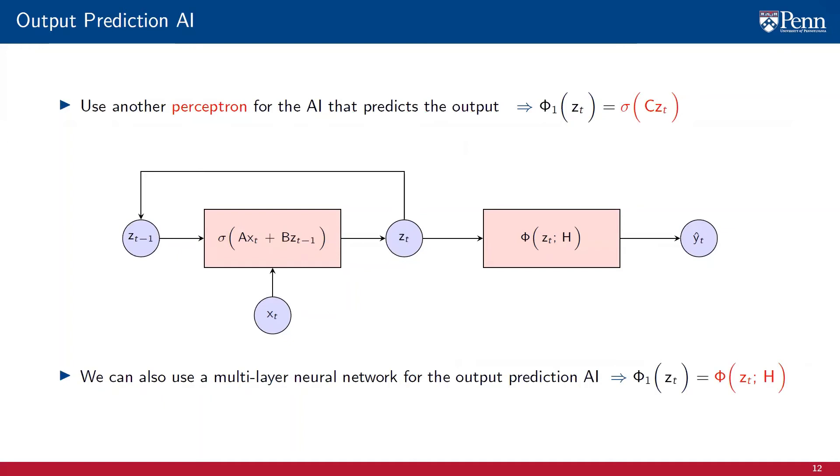The theme of this course is the exploitation of structure. RNNs exploit the structure of the sequence. On top of that, the observable state xt, the hidden state zt, and the observations yt can also have some structure that we can exploit. If they are graph signals, we can use graph filters in view of the arbitrary matrices A, B, and C. Introducing this extra structure leads to the introduction of graph-recurrent neural networks.